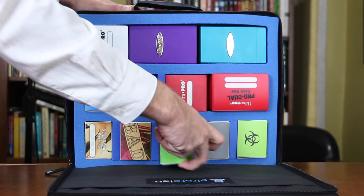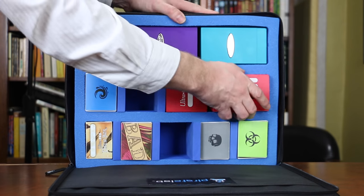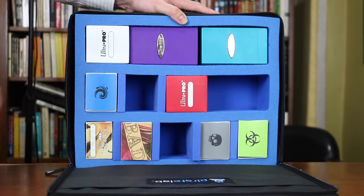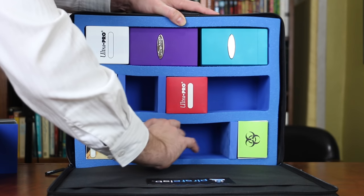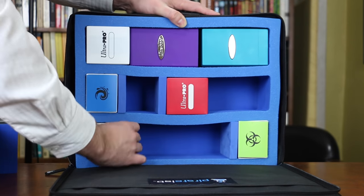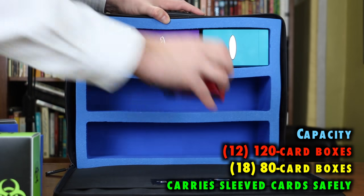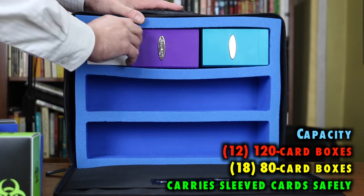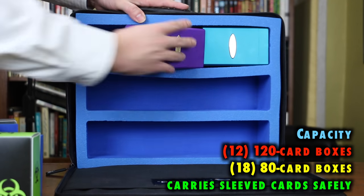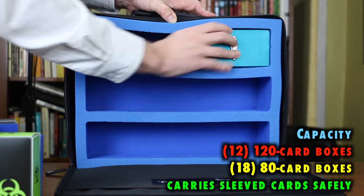Made of high-quality foam, this interior tray can be used to store loose cards or deck boxes of a variety of sizes. Rugged, durable, this is perfect for transporting up to 12 120-card boxes or 18 80-card boxes with dividers, and is suitable to carry extra unboxed sleeved cards safely.